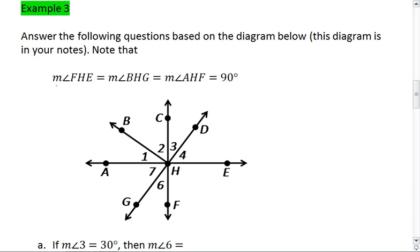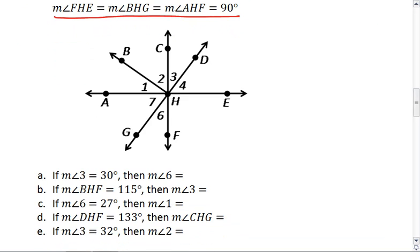Note that the measure of angle FHE equals the measure of angle BHG equals the measure of angle AHF, which all equals 90 degrees. So let's mark this. The moment you're given anything that's not already marked in your diagram, you want to make sure that you mark it. FHE is 90 degrees, BHG is 90 degrees, and AHF is 90 degrees.